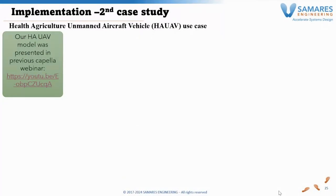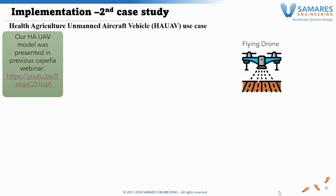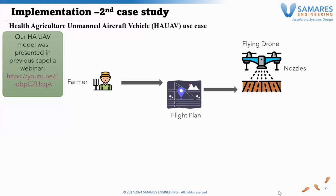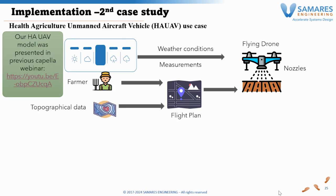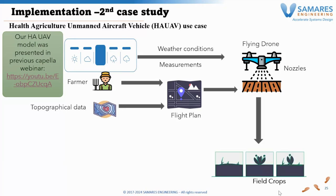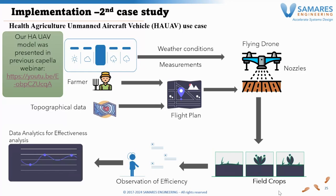Now we present another case study: the second case study. This is the Health Agricultural UAV, already presented in a previous webinar in 2022, as mentioned by Sebastian. The drone is a drone that protects crop fields from insects by spraying phytosanitary products. The farmer provides a flight plan to the drone and inputs topographical data. The measurement of weather conditions is also an input to the drone. The drone then sprays the field crops while monitoring the effectiveness analysis.